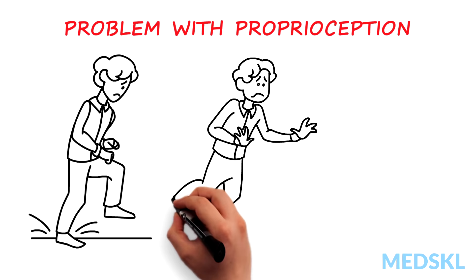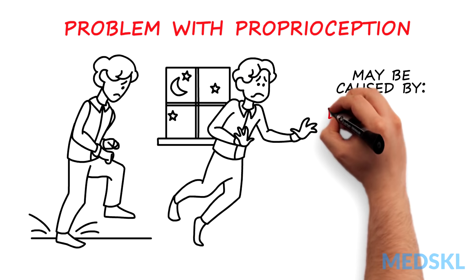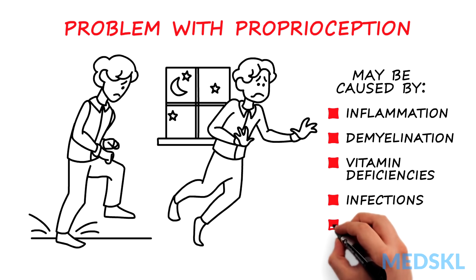They will often stumble if trying to walk in the dark as they no longer have visual input to assist them with their gait. This type of ataxia may be caused by inflammation, demyelination, vitamin deficiencies, infections and inherited disorders.